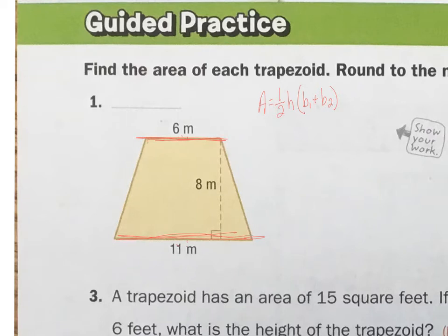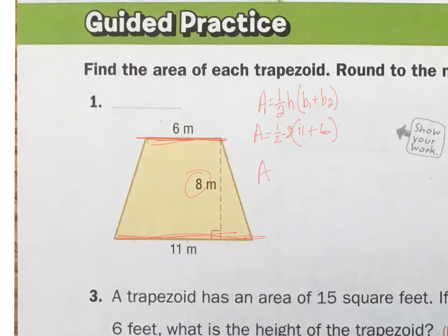Let's add some things. The height is 8. Area equals one-half times 8 times base one — we'll call 11 base one — plus base two, which is 6. Let's do the parentheses first. Area equals one-half times 8, parentheses 17.